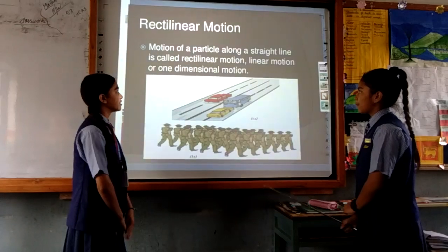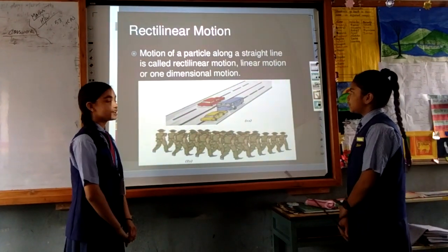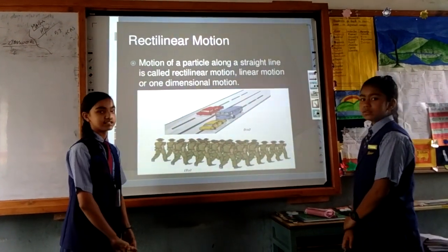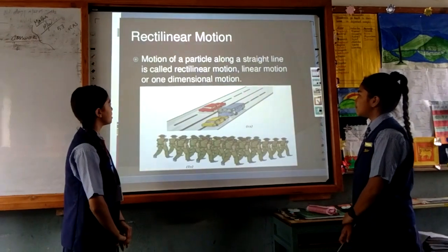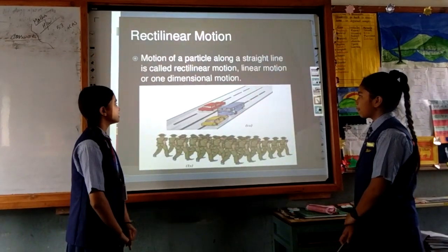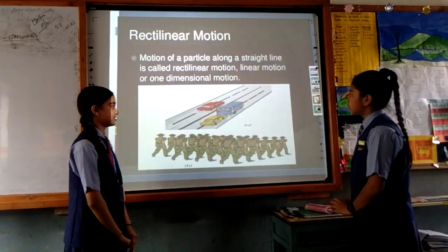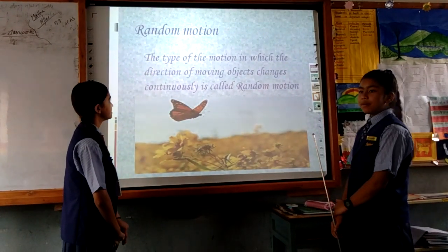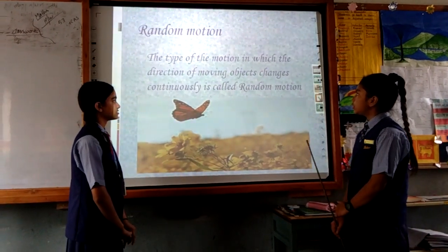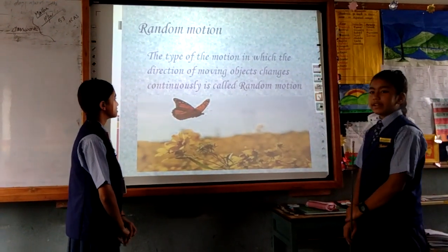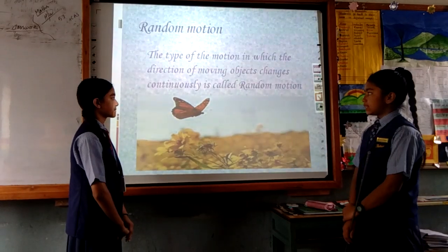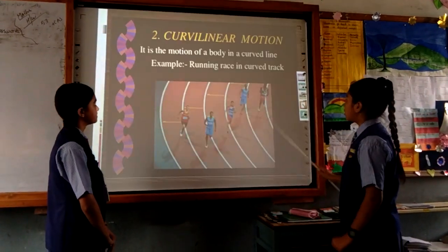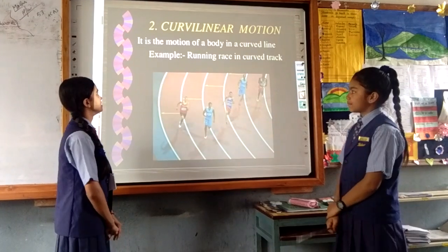Linear motion: motion of a particle along a straight line is called linear motion, also known as one-dimensional motion. Random motion: the type of motion in which the direction of a moving object changes continuously is called random motion.